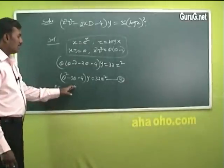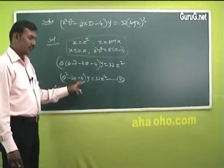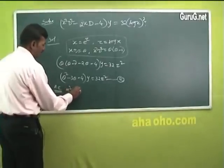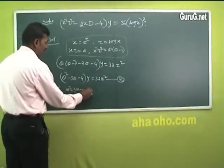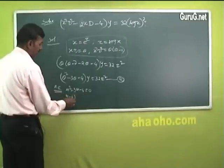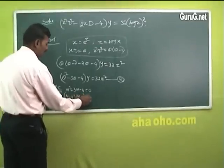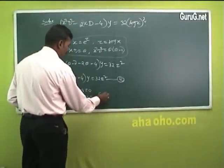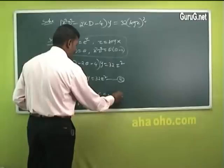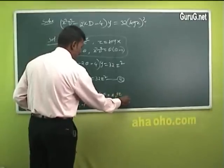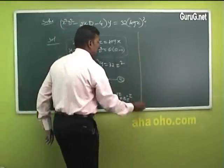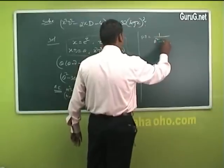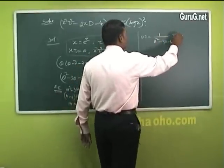This is a linear differential equation with constant coefficients. The auxiliary equation is m² - 3m - 4 = 0, which factors as (m - 4)(m + 1) = 0, giving m = 4 and m = -1. Therefore CF = ae⁴ᶻ + be⁻ᶻ. The particular integral is PI = (1/(θ² - 3θ - 4)) · 32z².